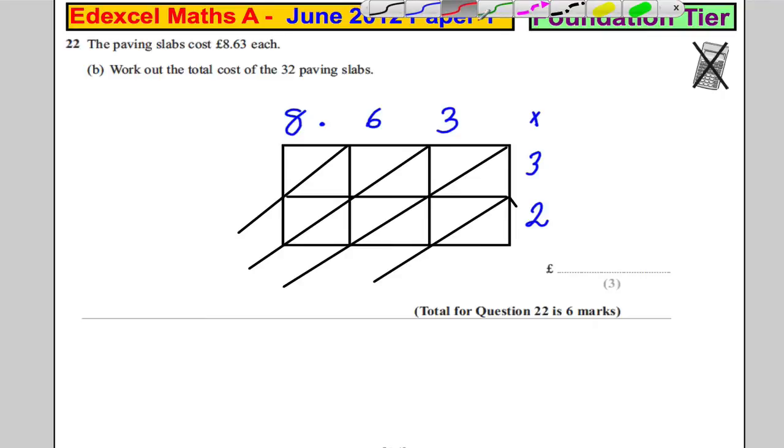So what you do then is you say 3 times 3 is 9. So that's 0 and 9. You say 2 times 3 is 6. 0 and 6. 3 times 6 is 18. Put the 1 here and the 8 here. 3 times 8 is 24. Put the 2 here and the 4 here. 2 times 6 is 12. Put the 1 here and the 2 here. And 2 times 8 is 16. Put the 1 here and the 6 there.